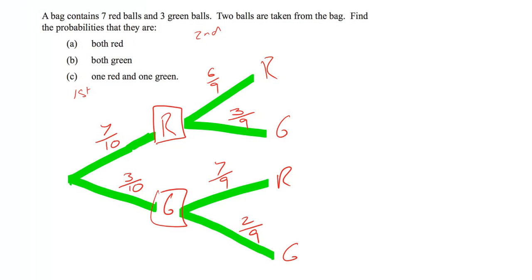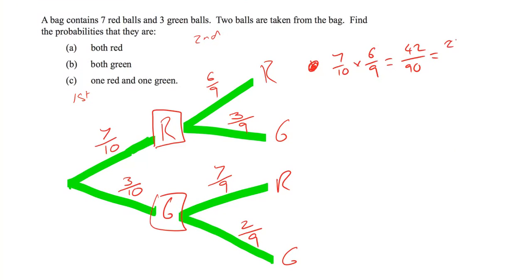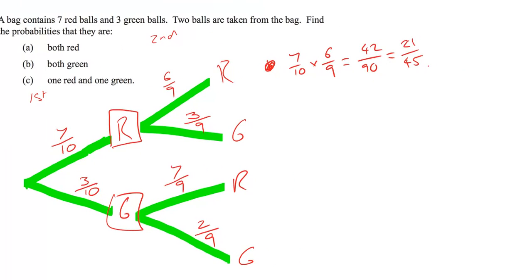The chance of getting both red balls is the top line of the tree diagram: seven over ten multiplied by six over nine, which is forty-two over ninety. That simplifies to twenty-one over forty-five, and dividing by three again gives us seven over fifteen.